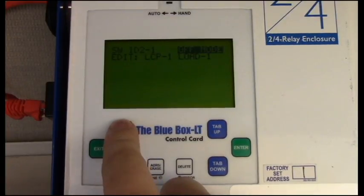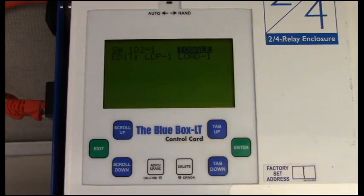We will select Toggle, which allows the switch to manually control the load. Once you've decided on a function, press the Tab down button to select the LCP number.